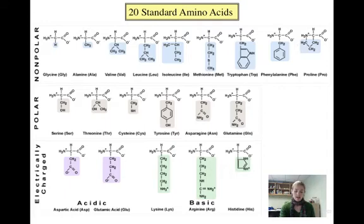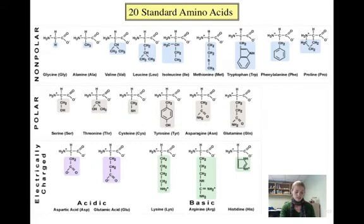All 20 amino acids have different R groups. Note that the simplest is glycine, with a single hydrogen atom as its R group. The amino acids here are separated into groups based on characteristics of their R groups. A number of them have R groups that are nonpolar, while others have polar R groups. Some are classified as acidic, while others are basic. Three of them — tryptophan, phenylalanine, and tyrosine — have ring structures as part of their R groups. The important takeaway is that every amino acid has its own distinct structure and properties because of its R group.